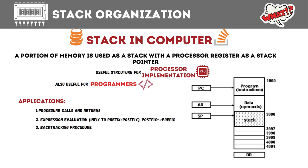Another application of the stack is the backtracking procedure. Backtracking is a type of problem where we search for a solution through a number of paths. We go to one solution, then another, and when we find that some solution is wrong, we backtrack to the previous decision point. The stack is used to keep track of the last decision taken so that we can backtrack and take an alternative decision.